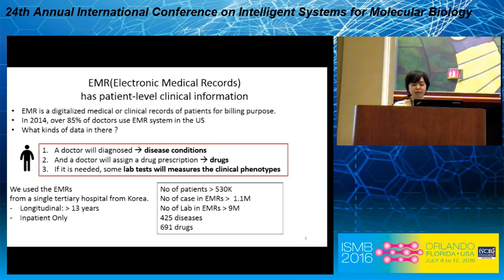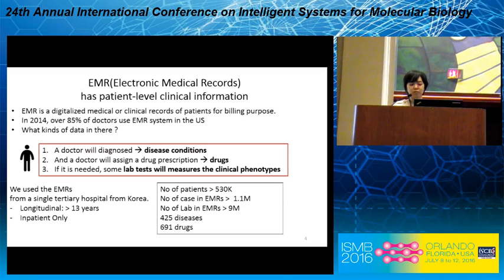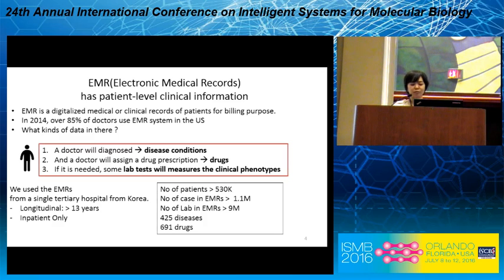So what kind of data is in there, and what can we use for drug repositioning? When a patient visits a hospital, a doctor will diagnose the patient and assign a drug prescription. If needed, some lab tests like blood glucose level will measure the clinical phenotype of the patient. There are three types of data in EMR: the disease condition of each patient, what kind of drug was prescribed, and their lab test results.